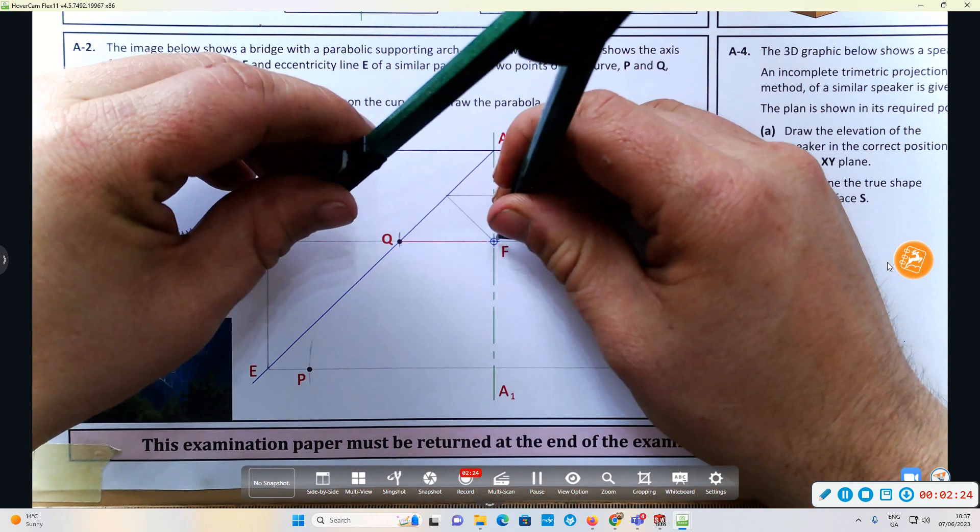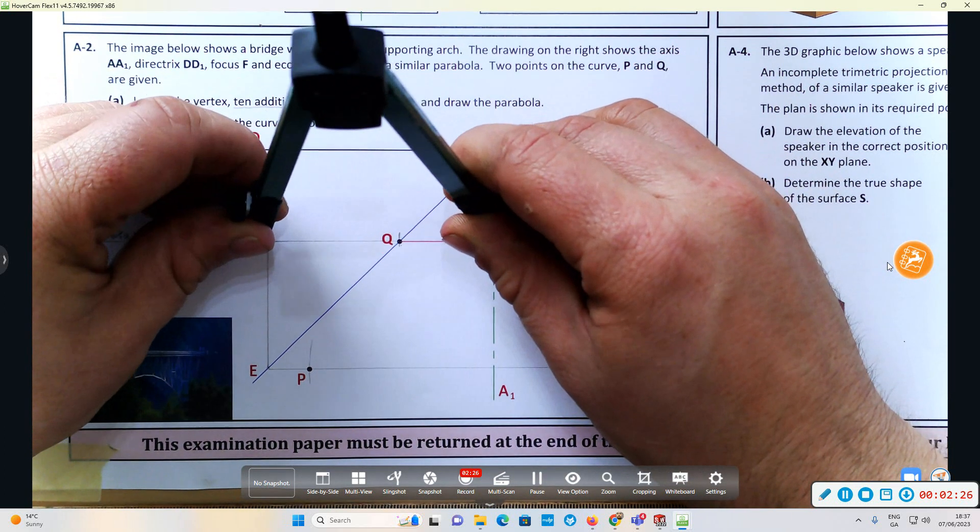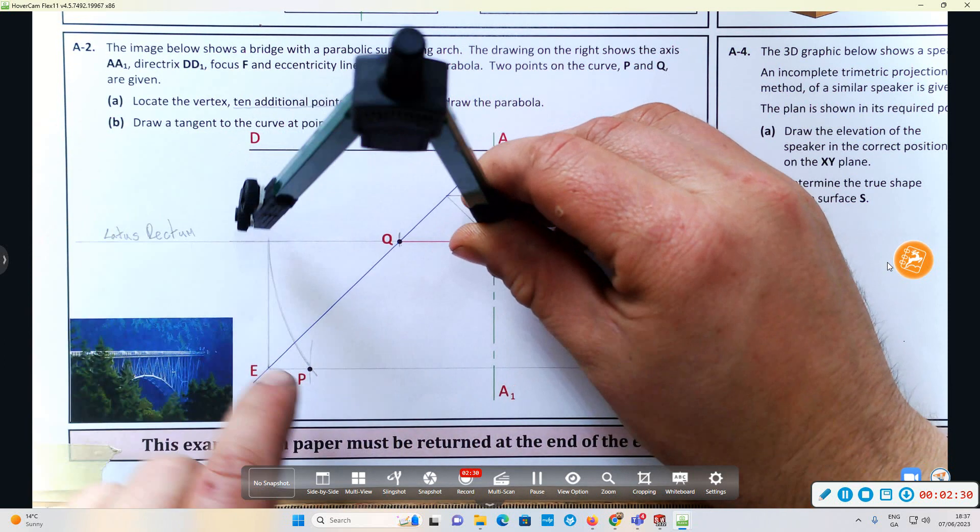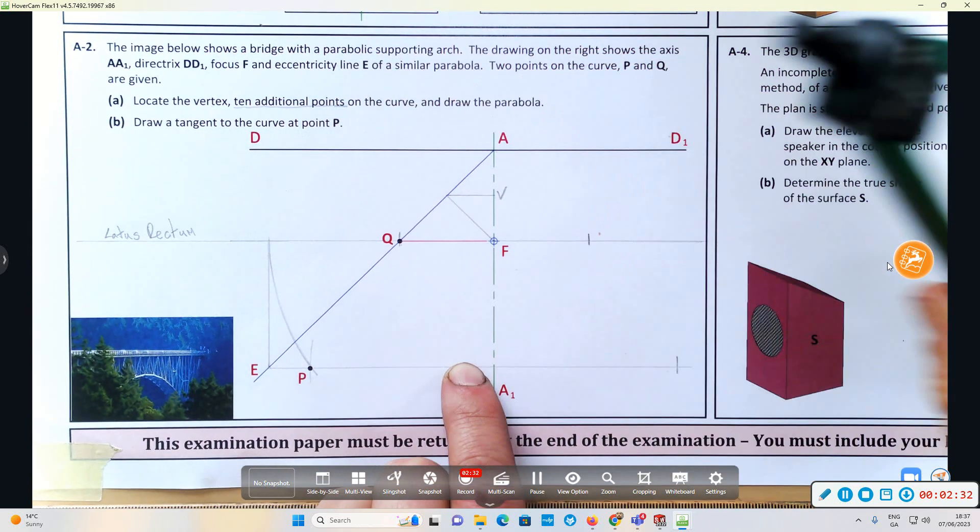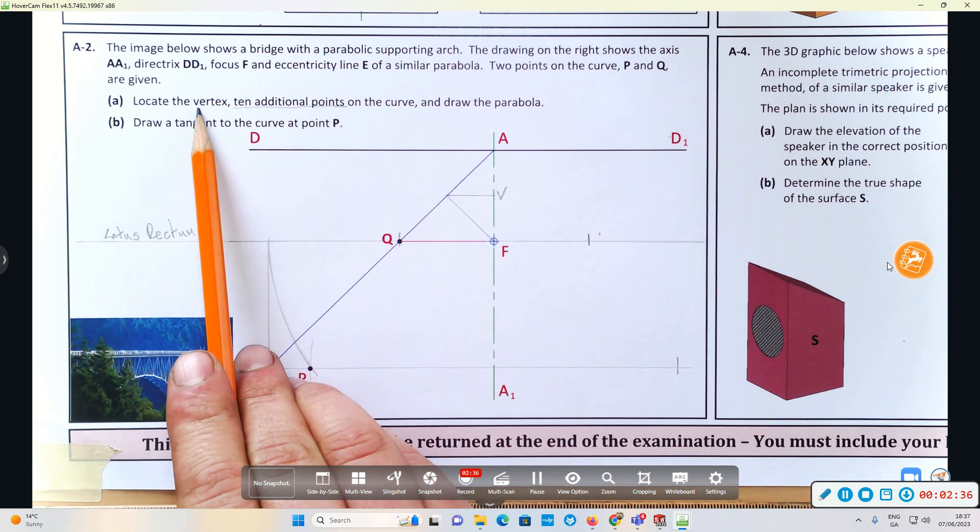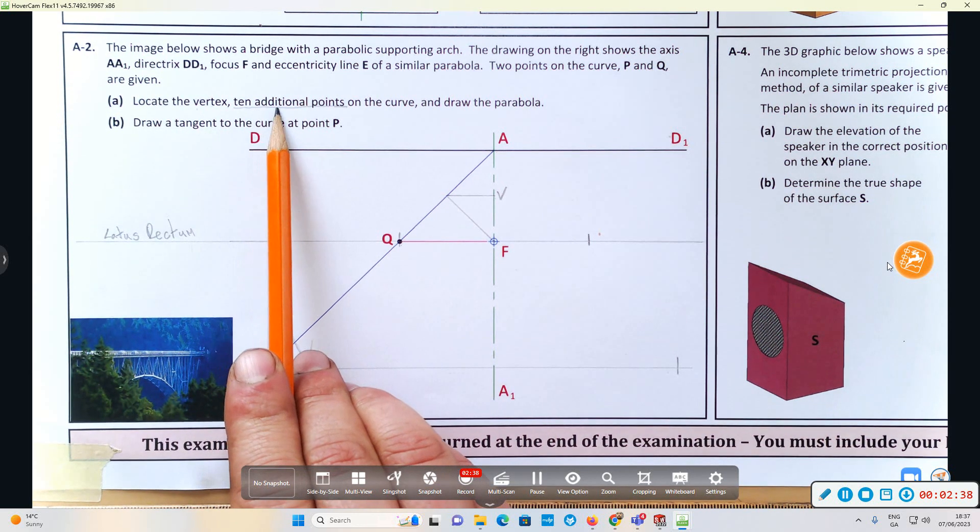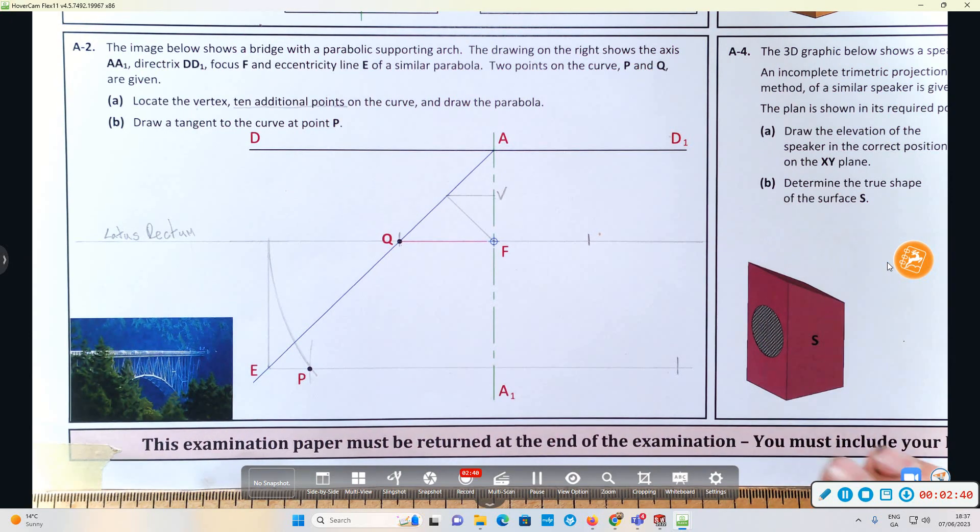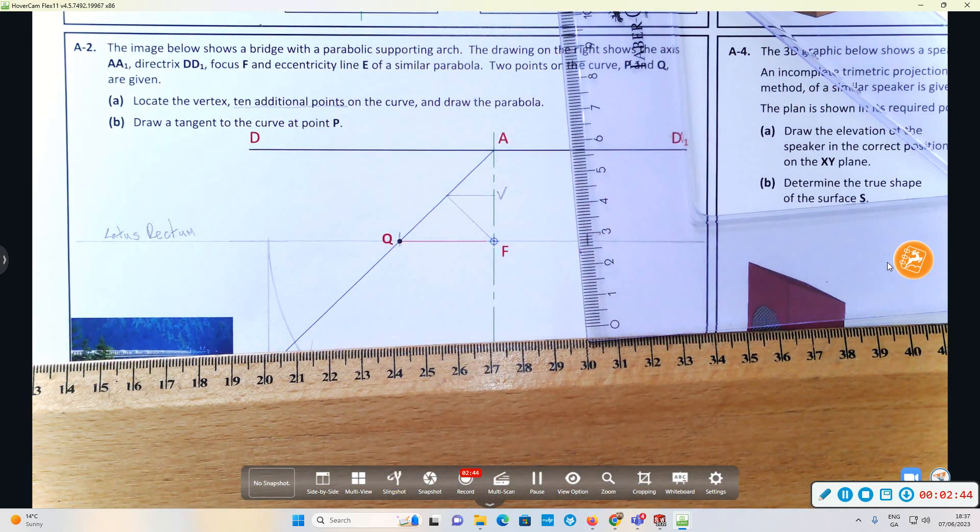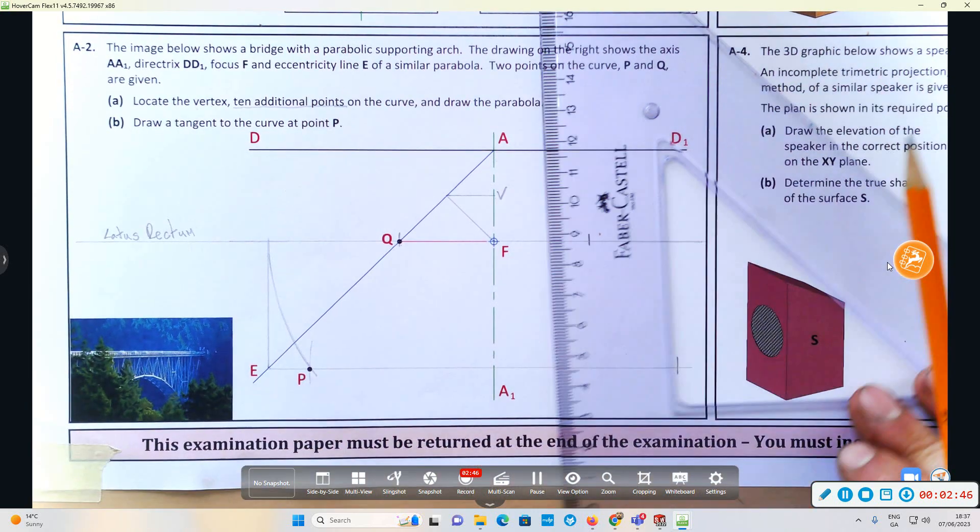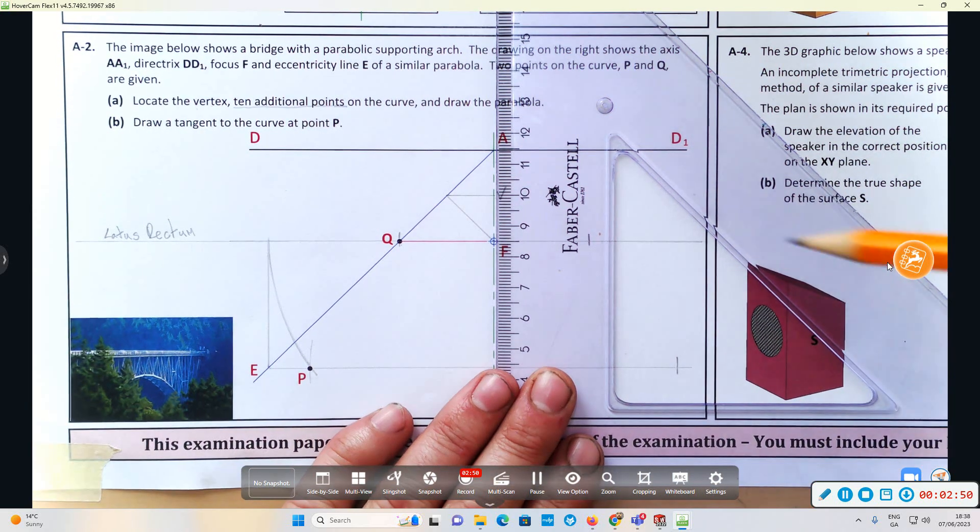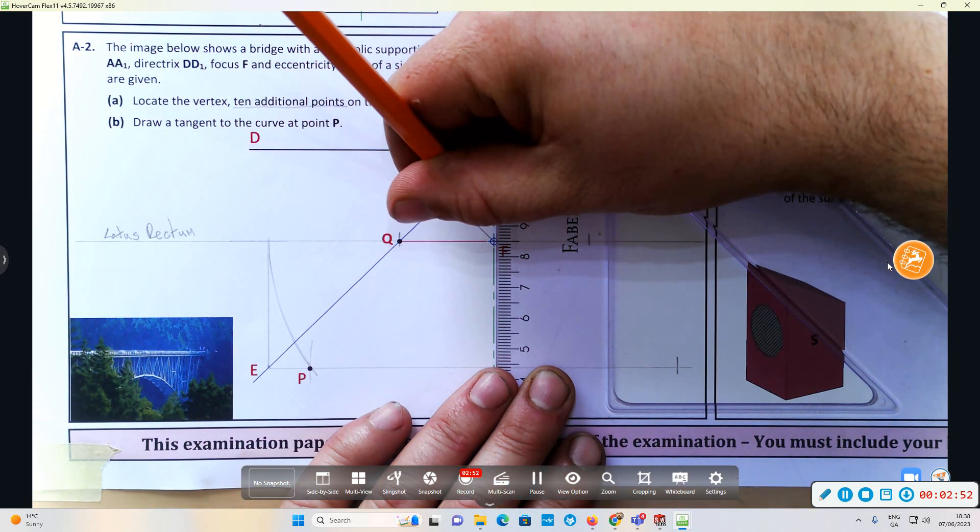Stop it when it reaches the latus rectum, put your compass on F, and swing your compass back till it touches that ordinate that's parallel to the directrix. So we have located the vertex and now we have to get ten additional points on the parabola. It's always good practice to locate one between V and S—you can be awarded four marks for that or lose four marks.